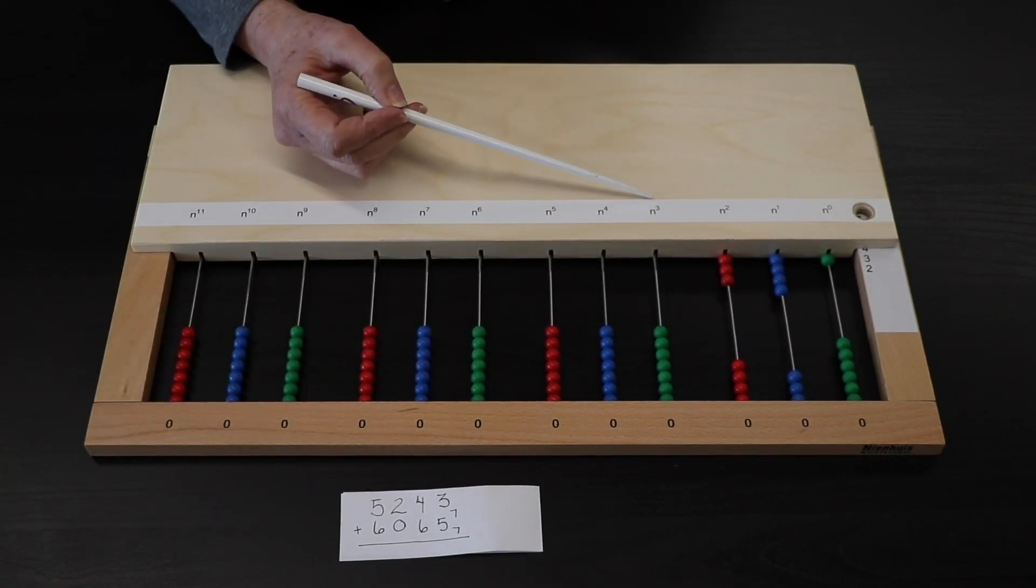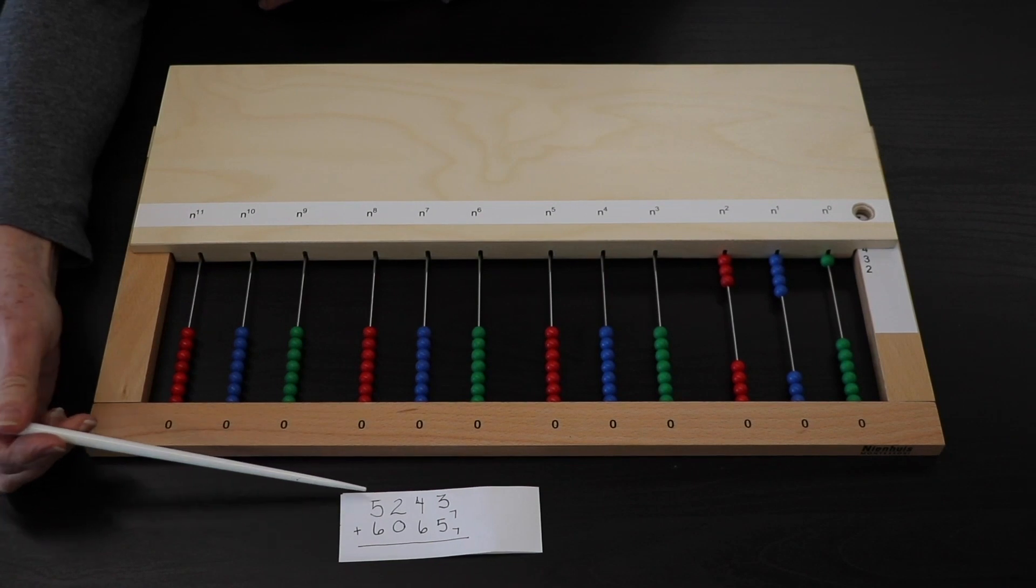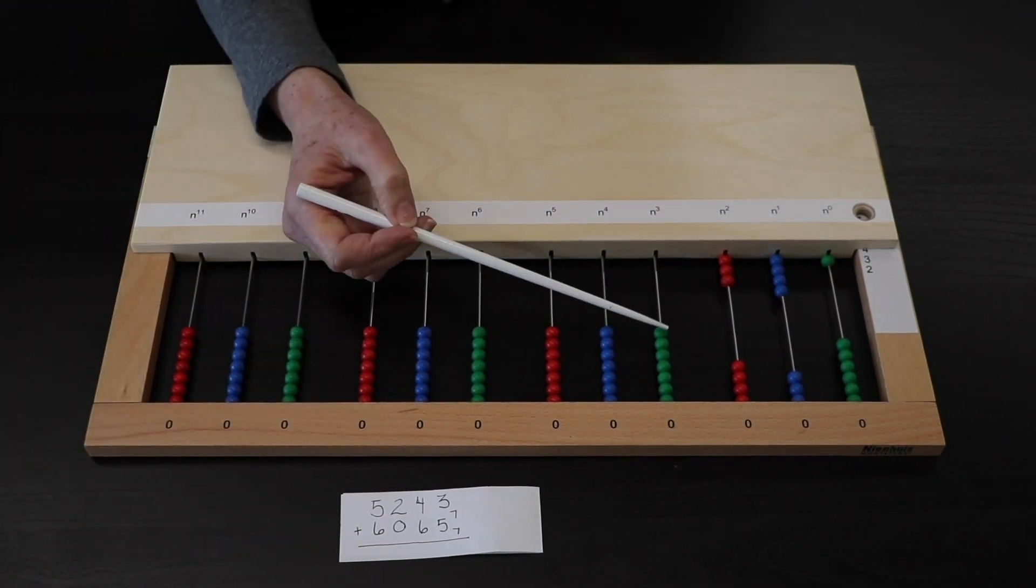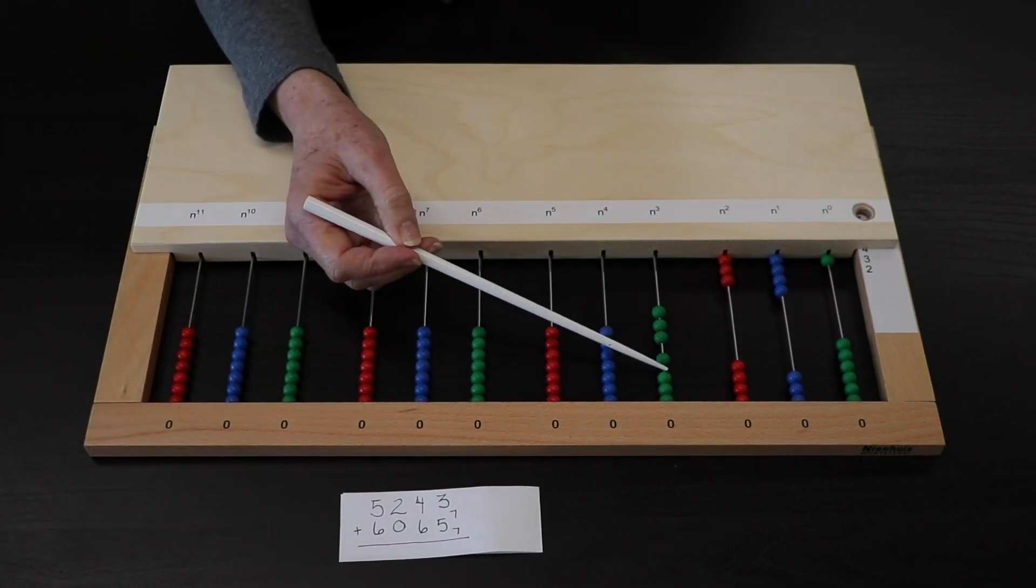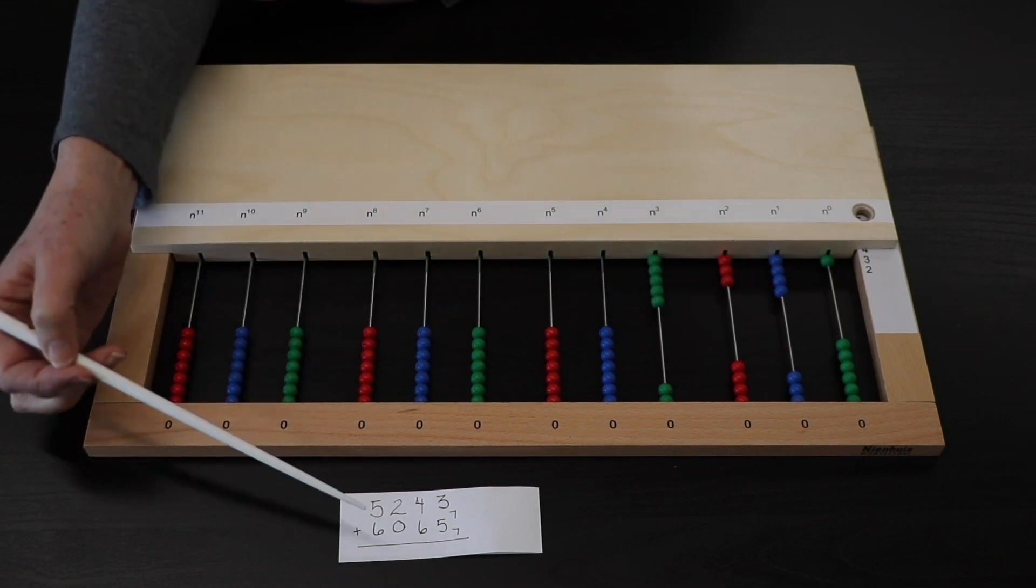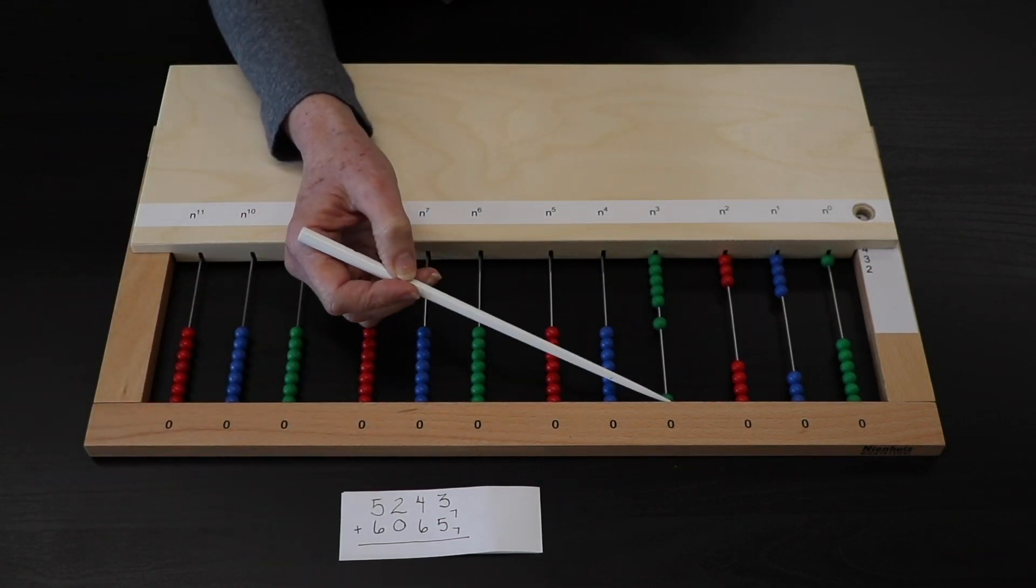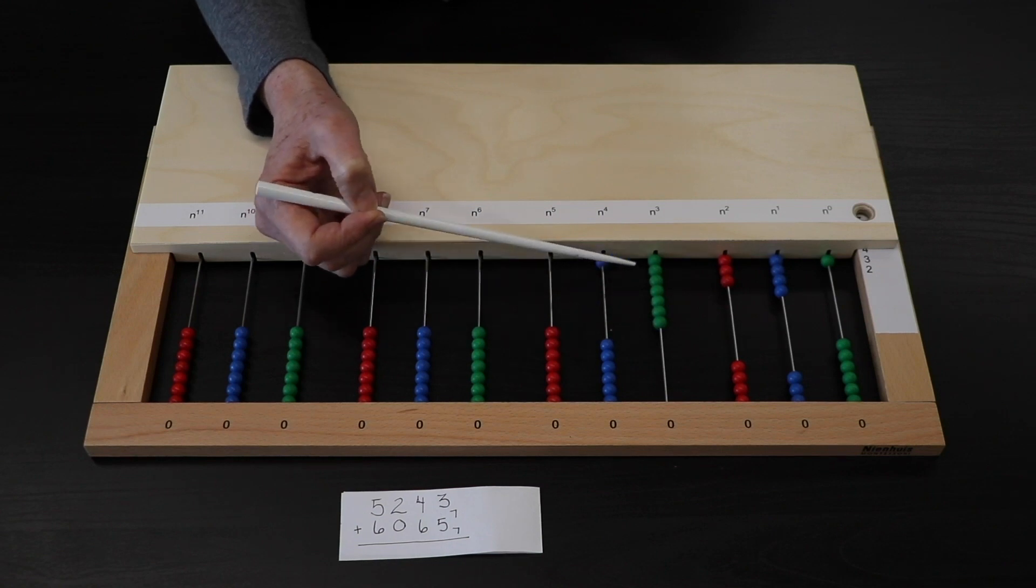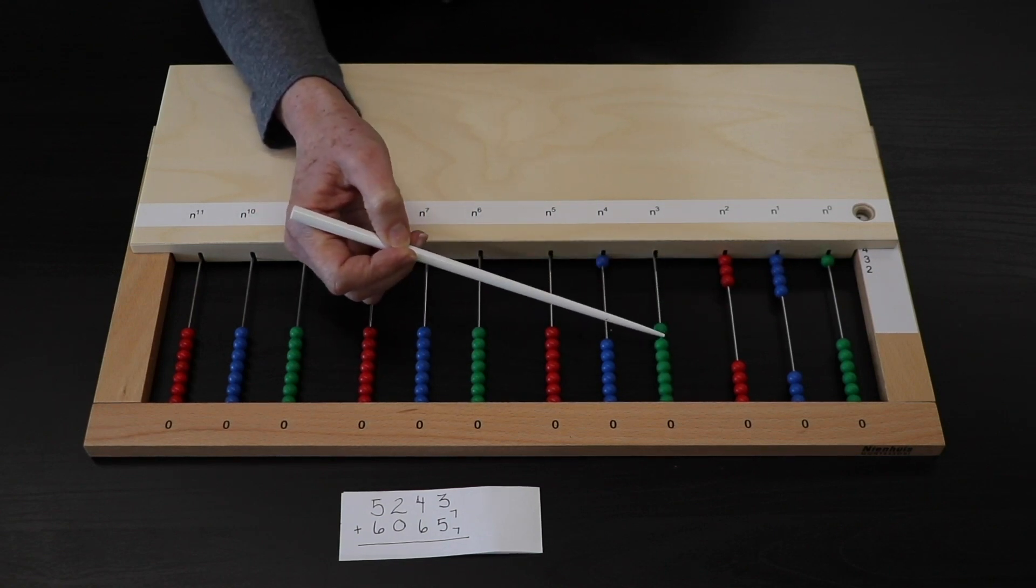In my 7 to the third power, I will have 5, 1, 2, 3, 4, 5, and I need to add 6 more. 1, 2, exchange, 3, 4, 5, 6.